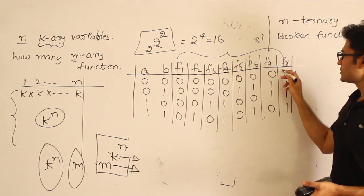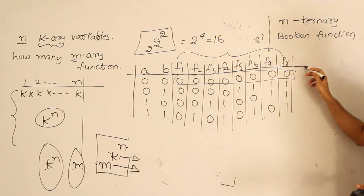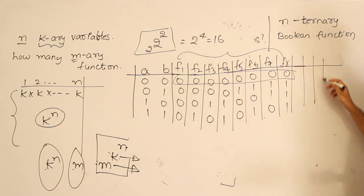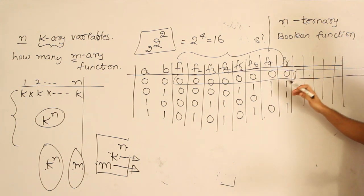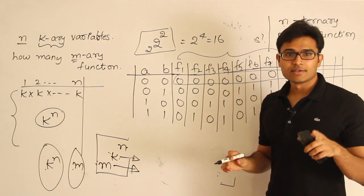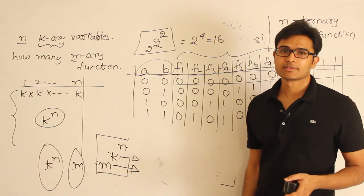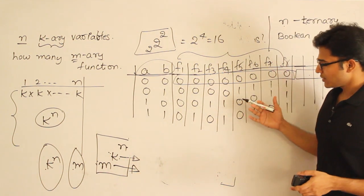These are eight functions where the first output value is 0. We can reproduce eight more functions by setting the first output to 1 and repeating the remaining combinations. Therefore we get 16 distinct functions in total with just two variables.